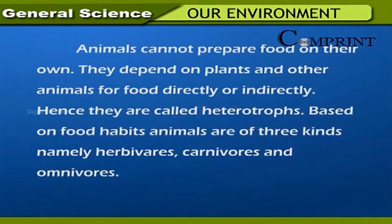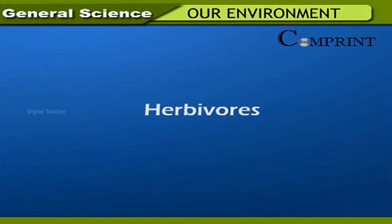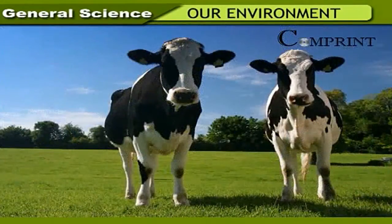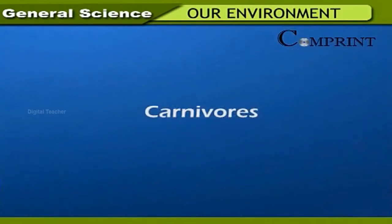Animals: Animals cannot prepare food on their own; they depend on plants and other animals for food directly or indirectly, hence they are called heterotrophs. Based on food habits, animals are of three kinds: herbivores, carnivores, and omnivores. Herbivores are animals that feed only on plants and plant parts, hence they are called primary consumers. Examples: cow, goat, rabbit, deer, elephant, grasshopper.